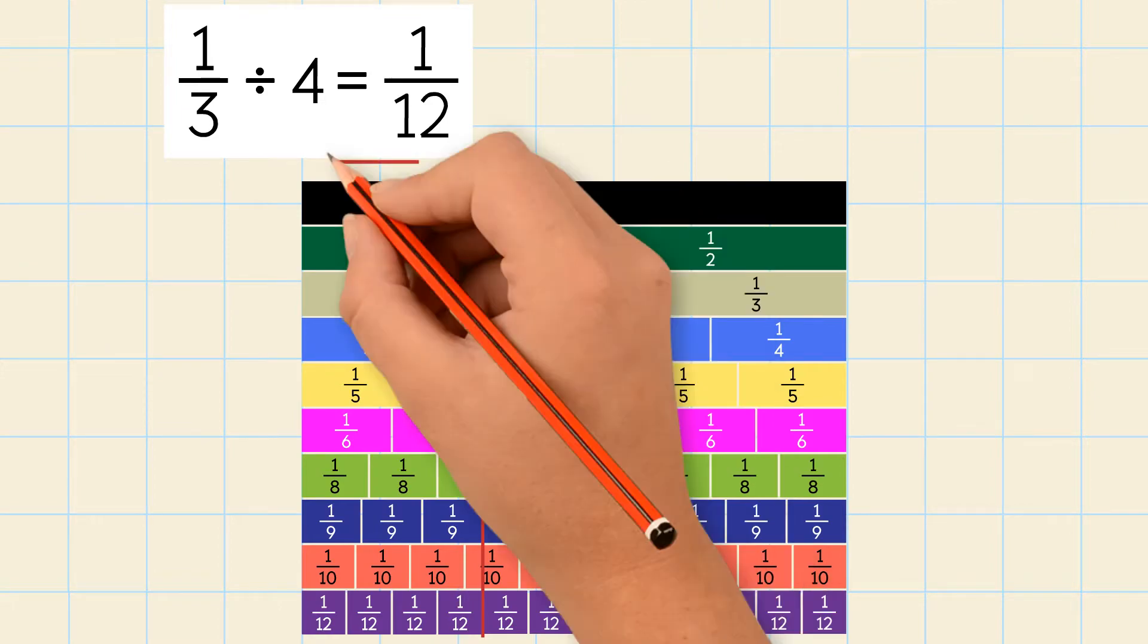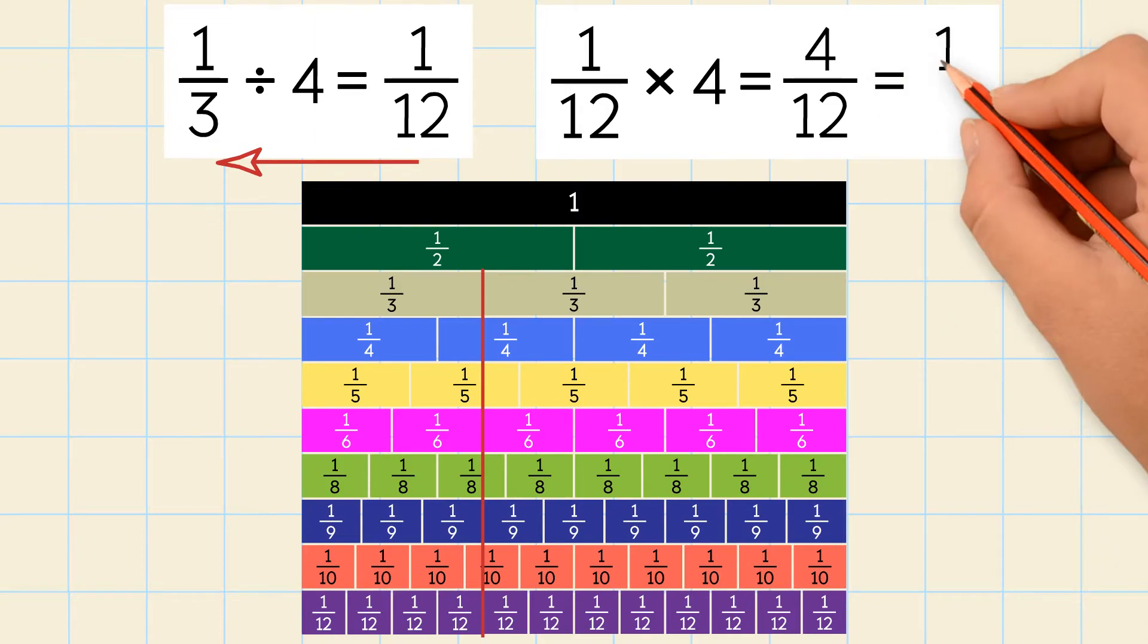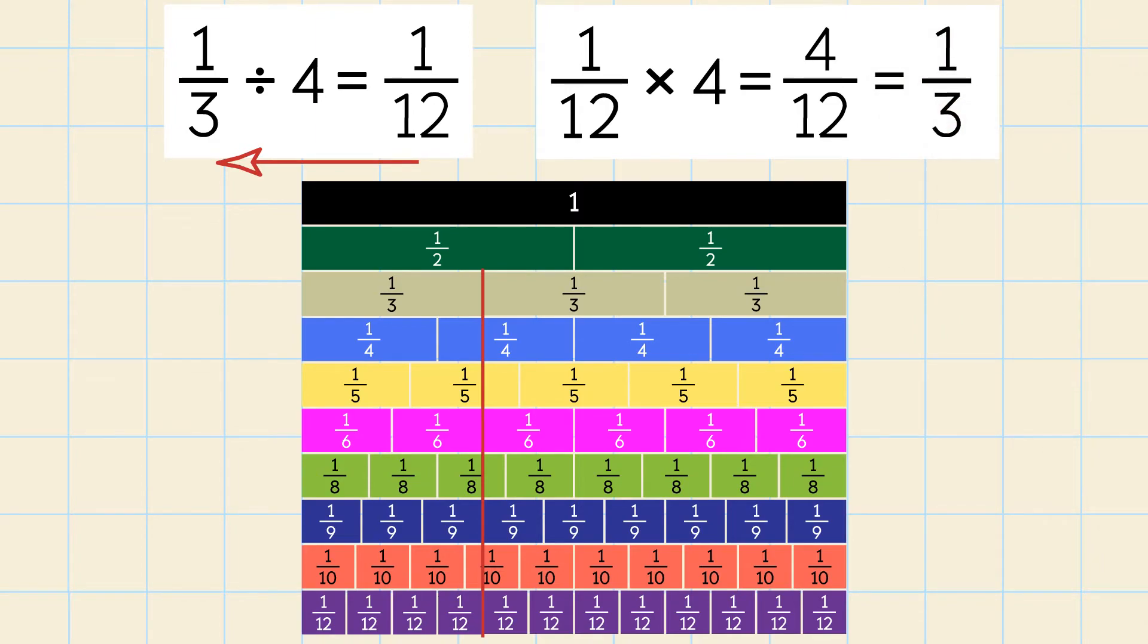Now let's check our answer using the inverse operation, multiplication. We do 1 twelfth times 4. This gives us 4 over 12. We simplify to get 1 third. So our answer was correct.